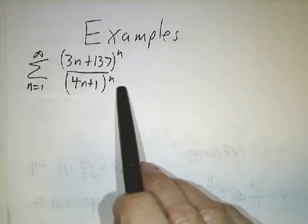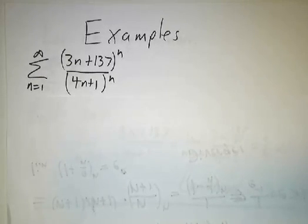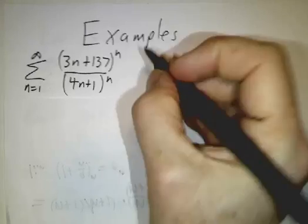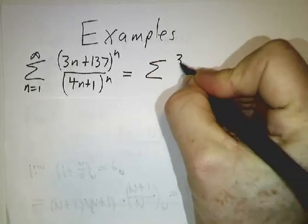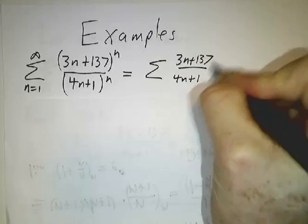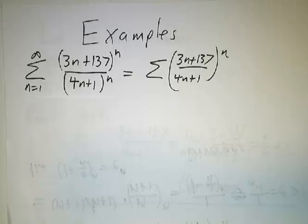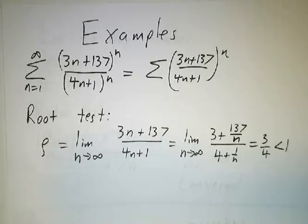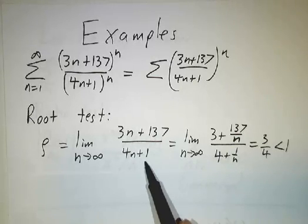It's pretty bad for the ratio test because you've got all these nth powers floating around, but when it comes to the root test, this is the sum of (3n + 137) over (4n + 1) to the nth power, so taking the nth root of that is very, very easy. So you do the root test, and you get that rho is the limit of (3n + 137) over (4n + 1).